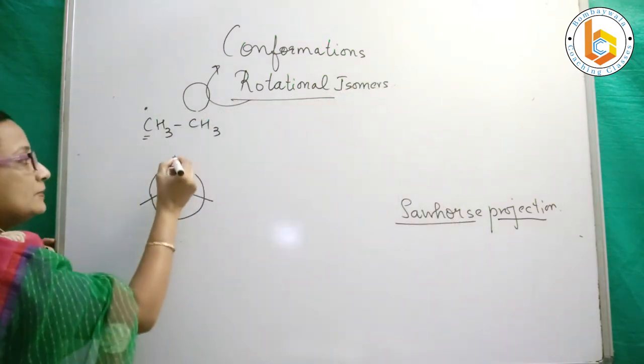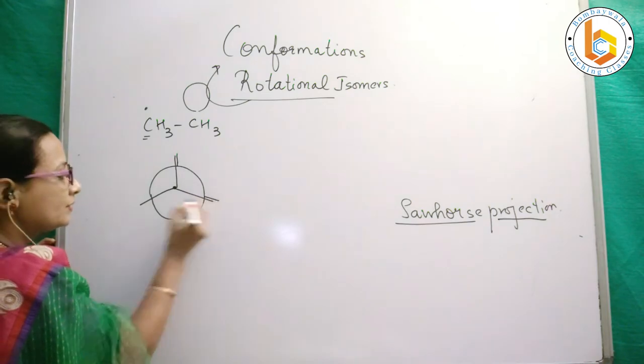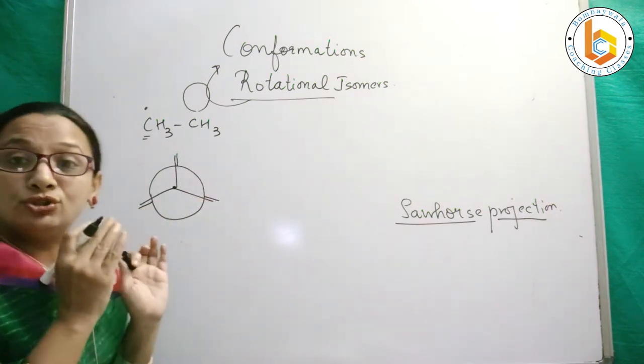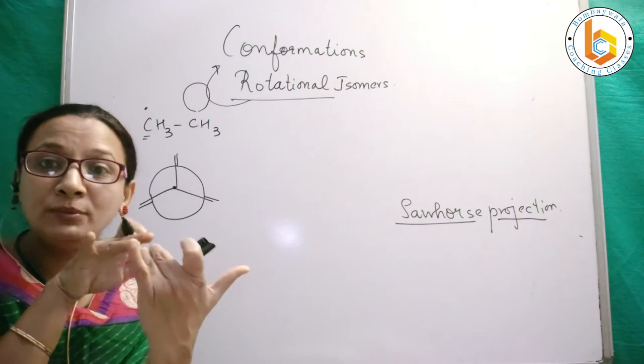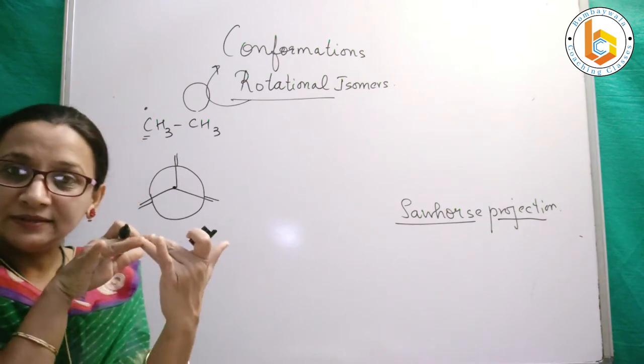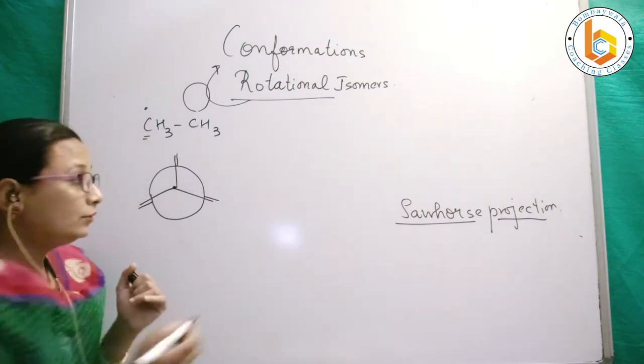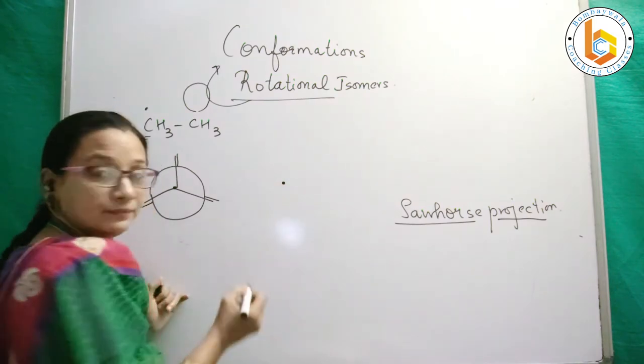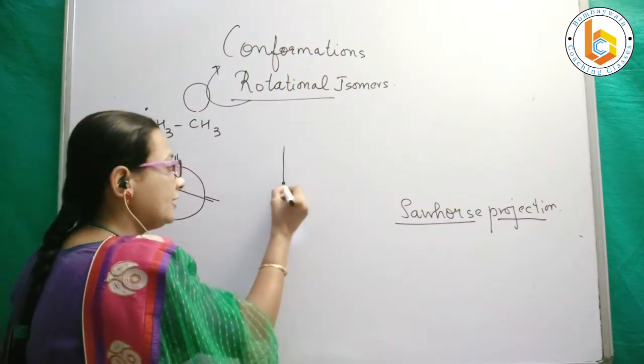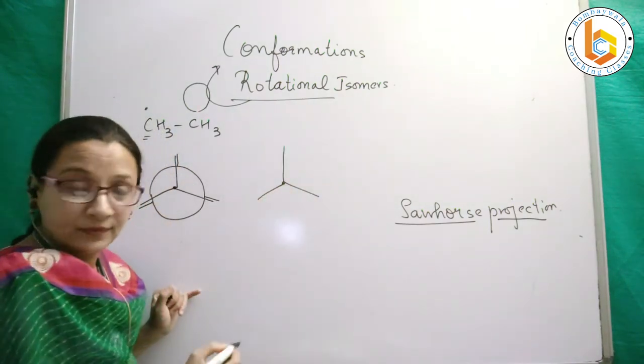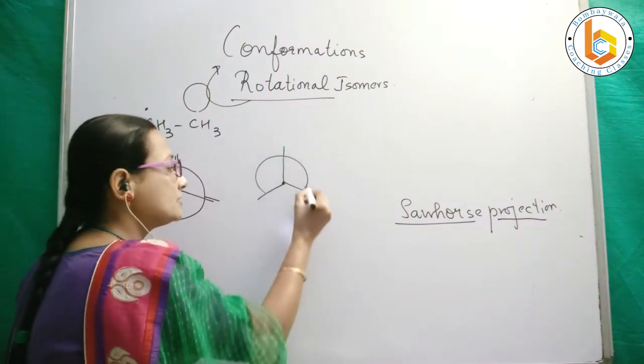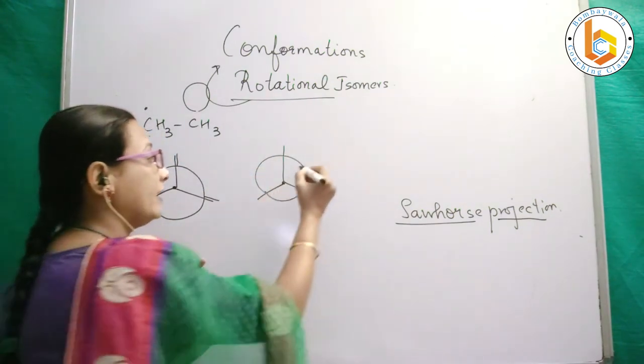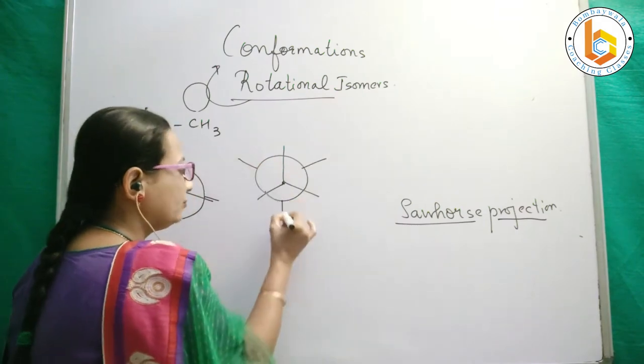This type of Newman projection where the bonds overlap is called eclipsed, and the form wherein all the bonds are visible is called staggered.